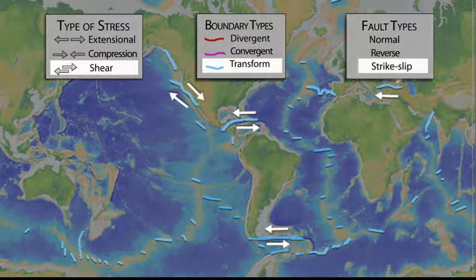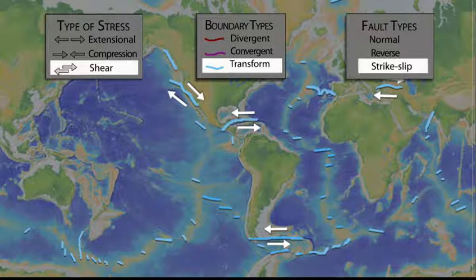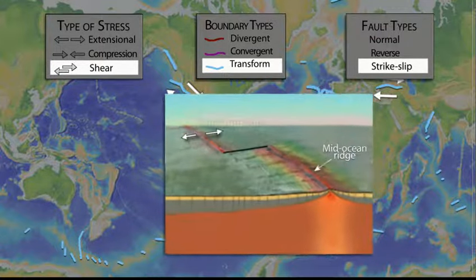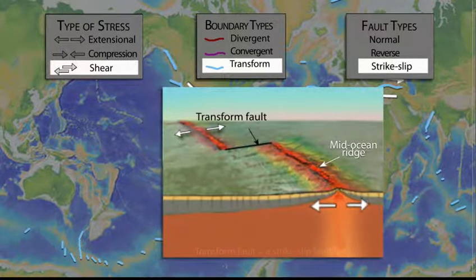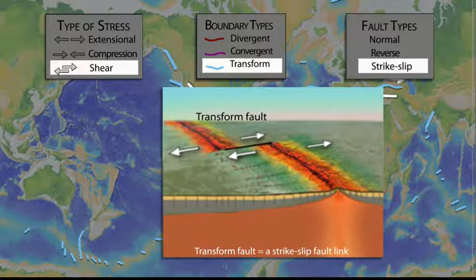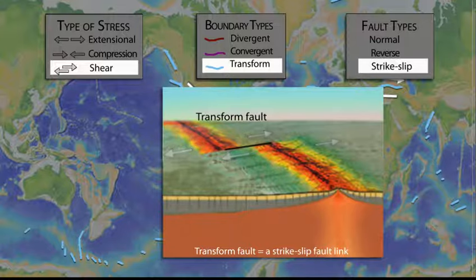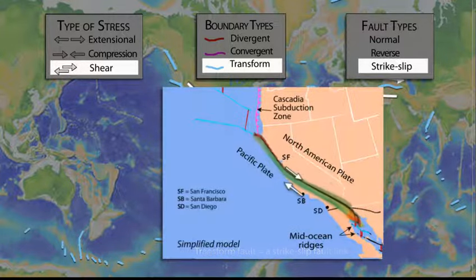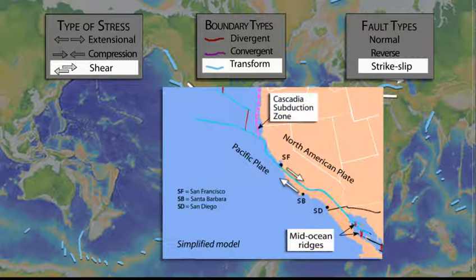Shear stress occurs at transform boundaries where two plates slide horizontally past each other with strike-slip motion. Transform faults link offset boundary segments. Most transform faults are found in the ocean basin where they connect offsets in mid-ocean ridges. Transform faults can also connect a spreading ridge with a subduction zone, such as the San Andreas Fault that separates the Pacific and the North American plates.